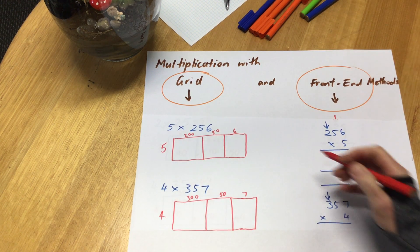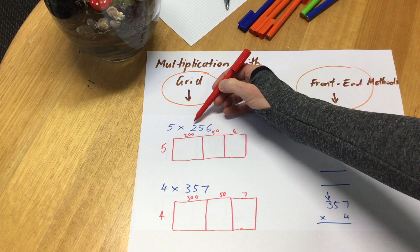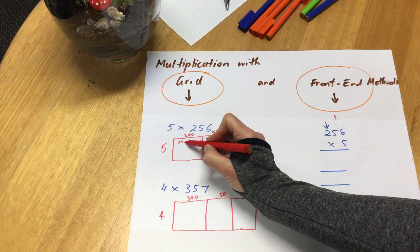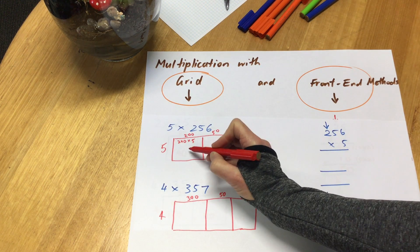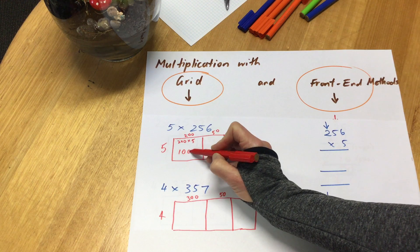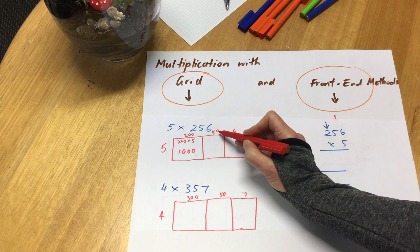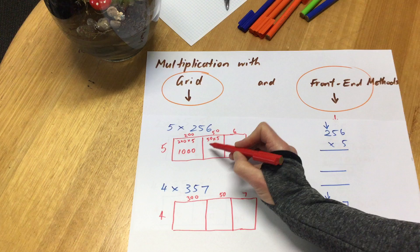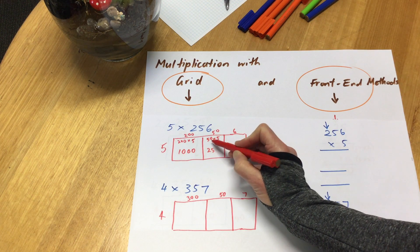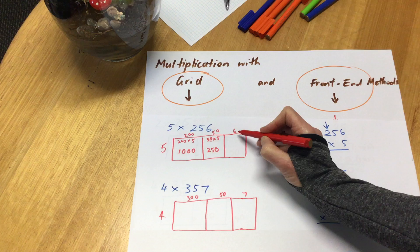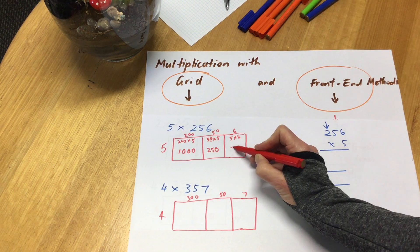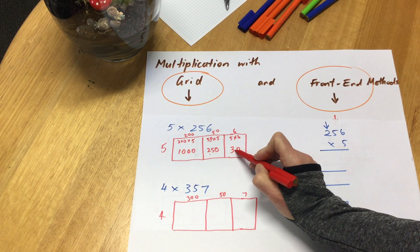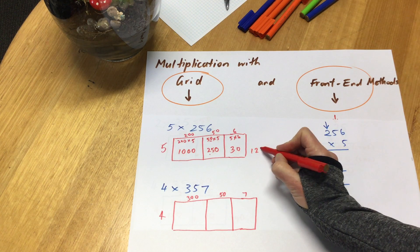Alright, let's try this one first, 5 times 256. 5 times 200, that's my multiplication I'm doing in my head, is 1000. 5 times 50, or 50 times 5, either way it means the same thing. 5 fives are 25, but we're talking about 25 tens, that's 250. And 5 sixes are 30. I'm going to add all of those together, I've got 1,280.